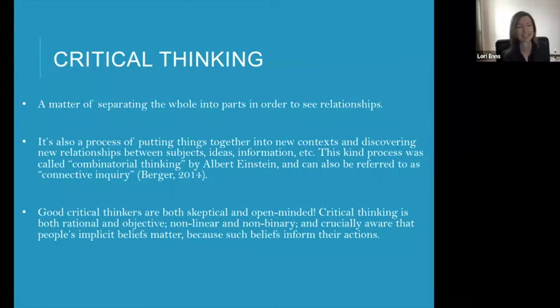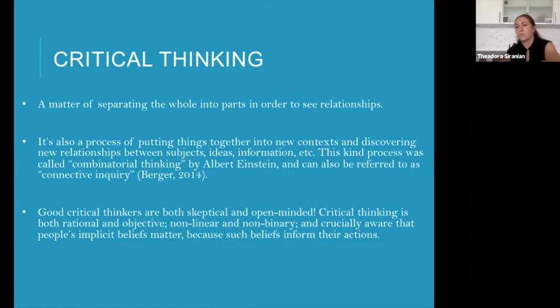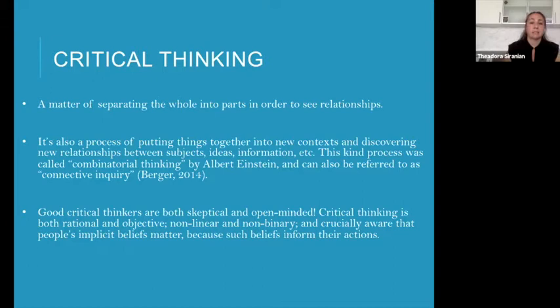Good critical thinkers are both skeptical and open minded, which might seem like a paradox. They need to be both rational and objective — skeptical, but also open minded and aware that critical thinking is nonlinear and non-binary. Anybody who's done research knows that research is not really a linear process. It doesn't go from A to B to C — oftentimes you have to step forward two steps and move back three, you go in circles, chase your tail, fall down a rabbit hole. By non-binary, I mean that especially in the social sciences, there isn't necessarily one absolute answer. Something isn't A or B, it's not either-or. Oftentimes there's a lot of in between.